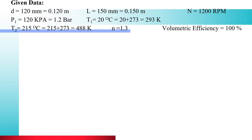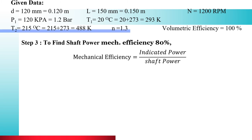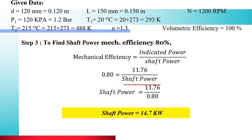Step 3: Find the shaft power when mechanical efficiency is 80%. Using: Mechanical Efficiency = Indicated Power / Shaft Power, we get: 80/100 = 11.76 / Shaft Power. Therefore, Shaft Power = 11.76 / 0.80 = 14.7 kW. If your answer is 14.7 kW, you have solved this correctly.